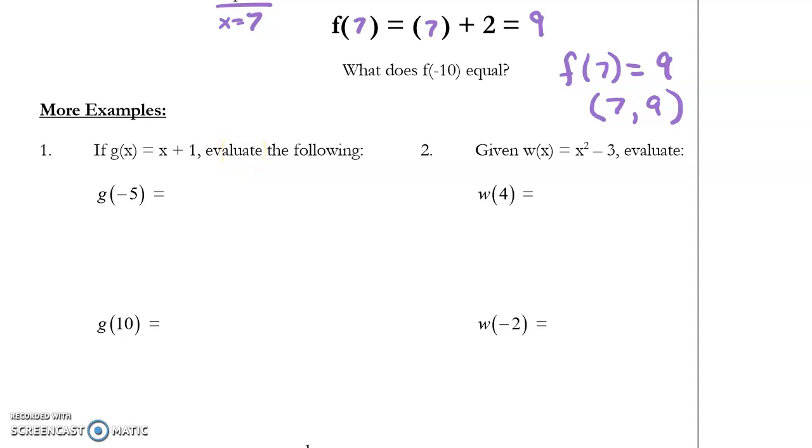I'll do the first one with you. I'm using g, which is x plus 1, and I'm inputting negative 5. So instead of x, I'm going to replace x with negative 5, and then get my answer. I want my answer written this way. g of negative 5 equals negative 5 plus 1 is negative 4. That's how we should write our solutions.